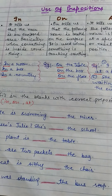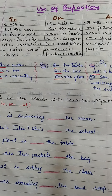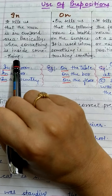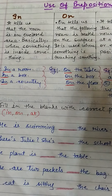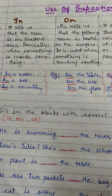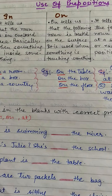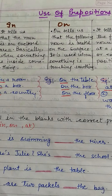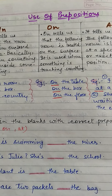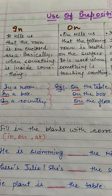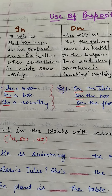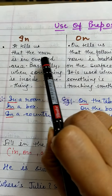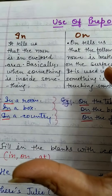First of all, the preposition 'in' is used as a preposition of place. It is used when something is inside something, and that enclosed space should be closed on all sides. Like in the previous class, there was a box — 'That ball is in the box.' The box was enclosed from all sides. So we use 'in' to tell that the noun is in an enclosed area — it cannot go anywhere.